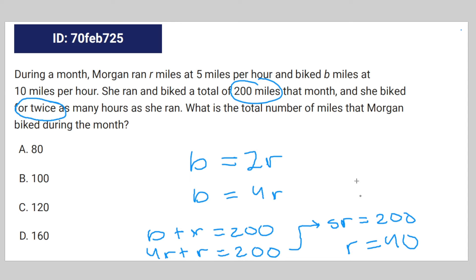But we're not looking for the amount she ran. We were looking for the amount she biked. So going back to this original equation, that's going to be b plus 40 equals 200. Subtract 40 from each side, you get b equals 160. And that means d, 160 is the correct answer.